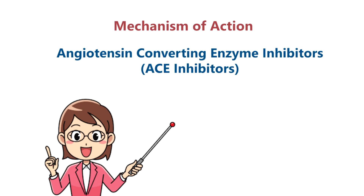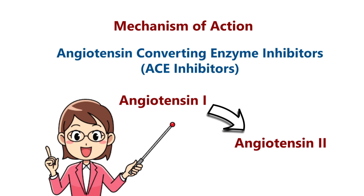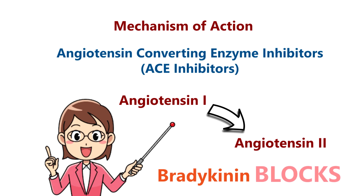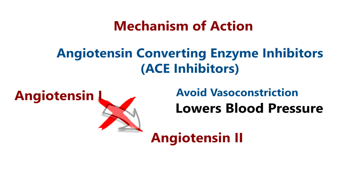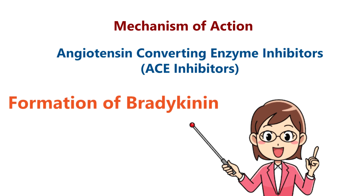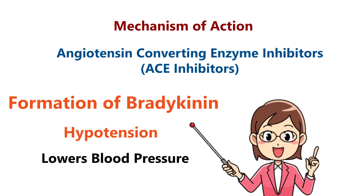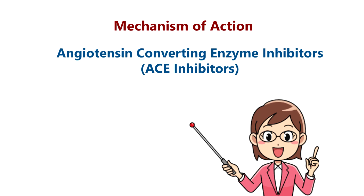Mechanism of action of ACE inhibitors: ACE inhibitors block the angiotensin converting enzyme, thereby preventing the conversion of Angiotensin 1 to Angiotensin 2. This avoids vasoconstriction and lowers blood pressure. ACE inhibitors also promote bradykinin formation, which further lowers blood pressure. This is how ACE inhibitors treat hypertension.